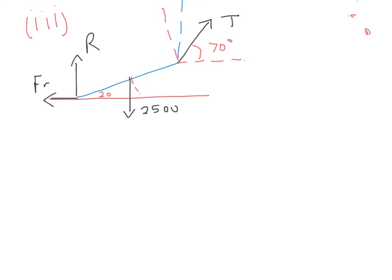In part three, we're asked to find T — not the magnitude and direction, just the value of T. So we're not interested at this stage in R or the friction. What we're going to do is take moments about point A, down at the bottom. Taking moments about A gives us a method mark and enables us to eliminate R and the friction.